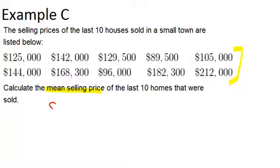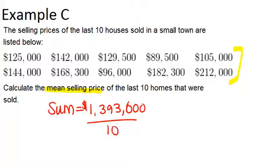When you add up all 10 numbers, you get $1,393,600. So then we want to divide that by 10, because there are 10 houses, in order to figure out our average.